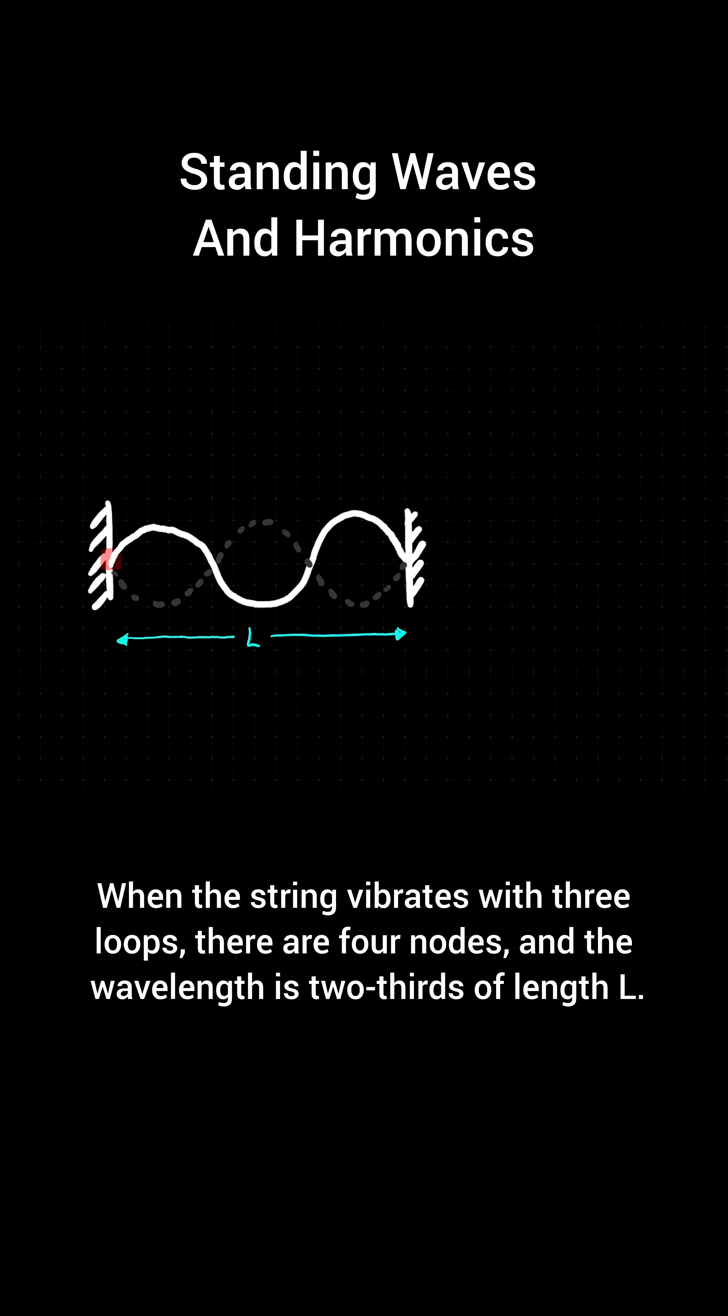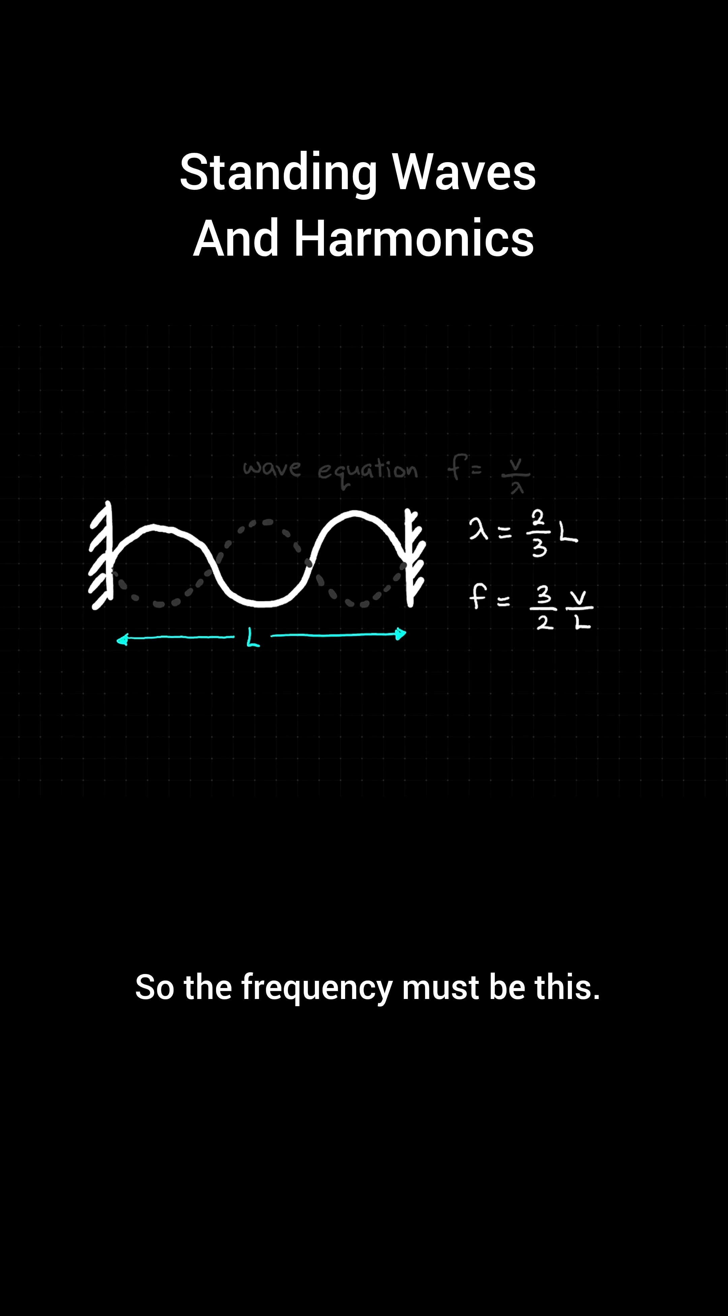When the string vibrates with three loops, there are four nodes, and the wavelength is two-thirds of length L, so the frequency must be this.